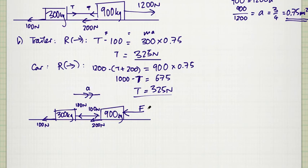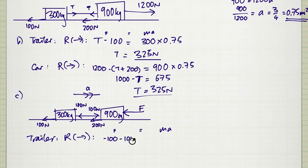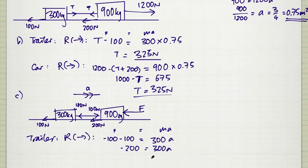Considering the trailer on its own and resolving horizontally with forward as positive: there are no forward forces — we have 100 newtons of resistance acting backwards and another 100 newtons of thrust from the tow bar acting backwards. So the equation is minus 200 equals 300A. Dividing both sides by 300 gives A equals minus two thirds. This acceleration applies to the whole system.